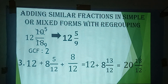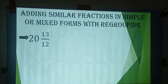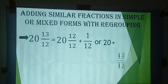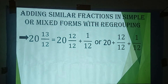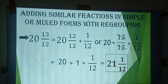Since 13 over 12 is greater than 1, we regroup: 20 and 13/12 can be written as 20 plus 12/12 plus 1/12. That gives us 20 plus 1 plus 1/12, which equals 21 and 1 over 12. That is the final answer.